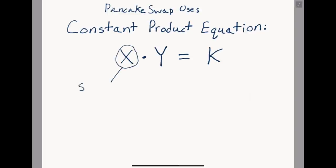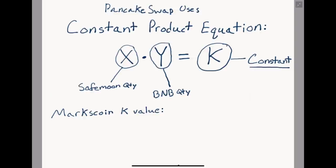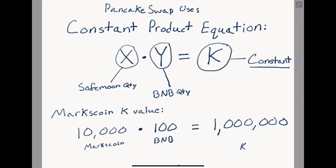X is the quantity of token 1 in the pool and Y is the quantity of token 2 in the pool. The main thing to take away from this function is that the product K is held constant and does not change. Let's see what the K value for Mark's Coin is: we take our 10,000 Mark's Coin and multiply that by the 100 BNB to get K equals 1 million.